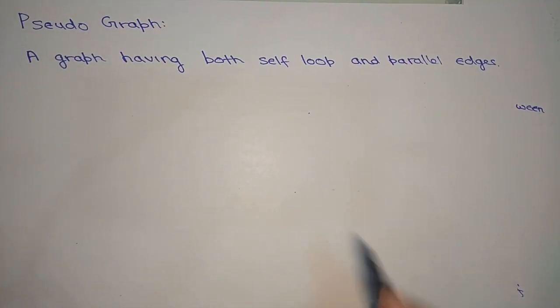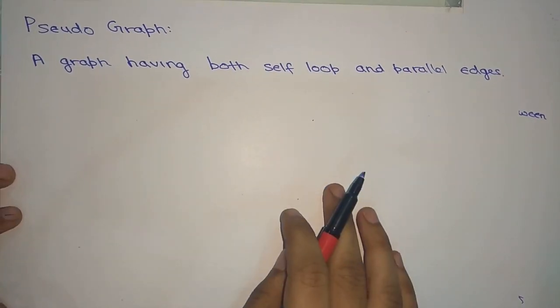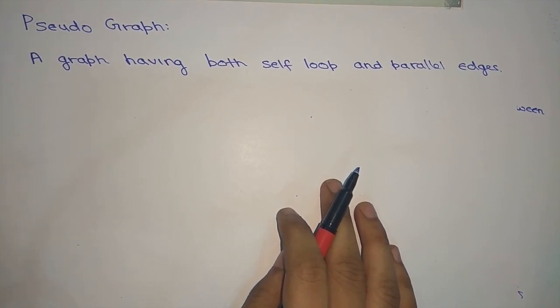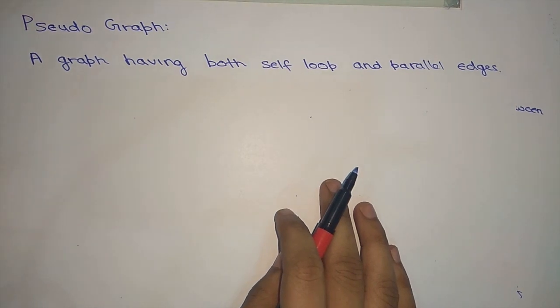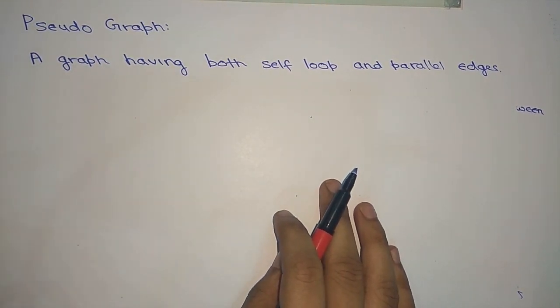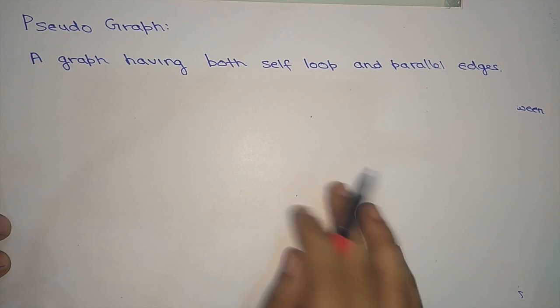A pseudo-graph is a graph having both self loops and parallel edges. A graph in which self loops and parallel edges are both present is called a pseudo-graph.